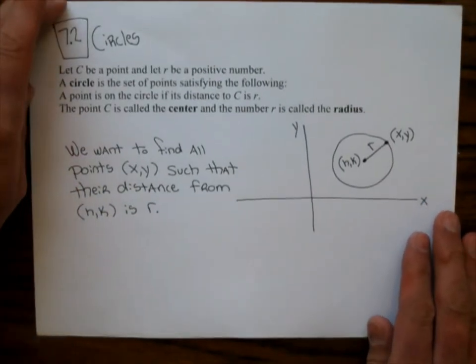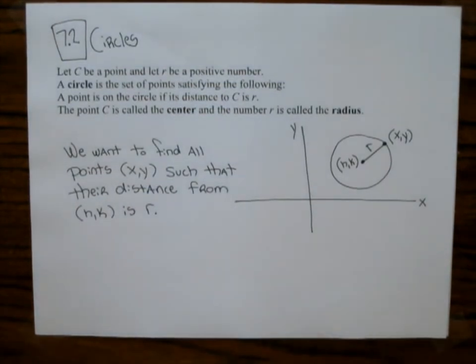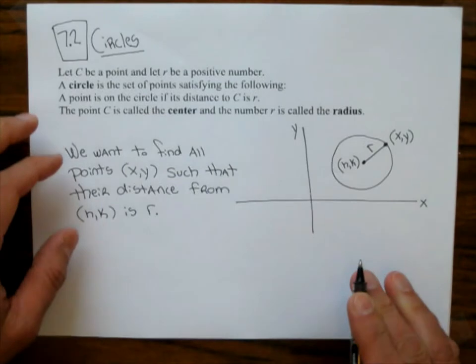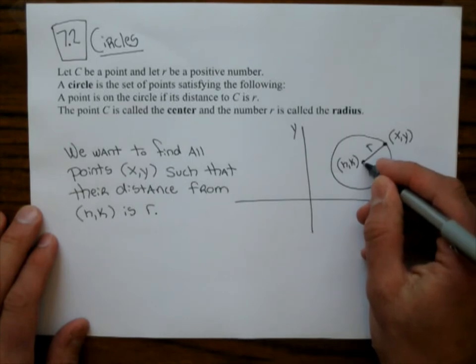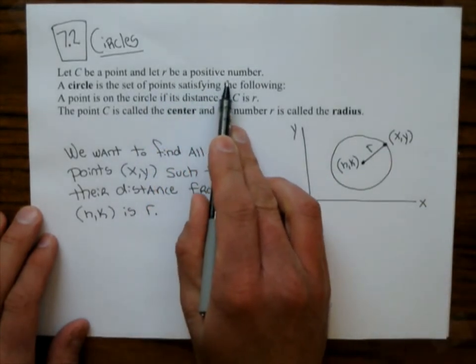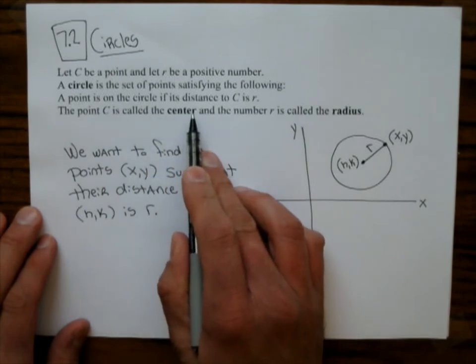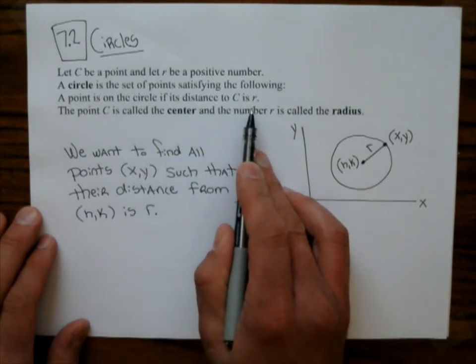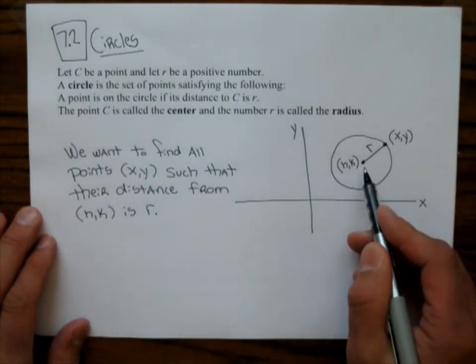So let's do section 7.2: Circles. Let C be a point — that's going to be the center right here. And let R be a positive number — that's the radius. The circle is the set of all points whose distance to C equals R. The point C is called the center, and R is called the radius.